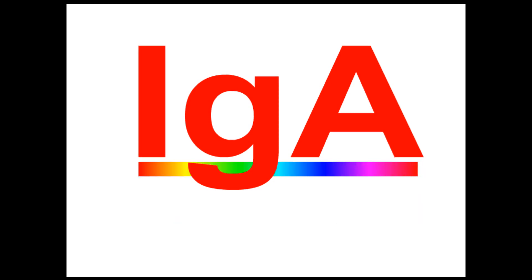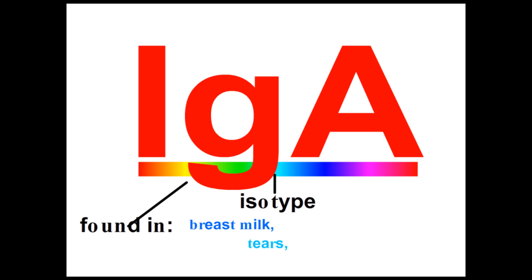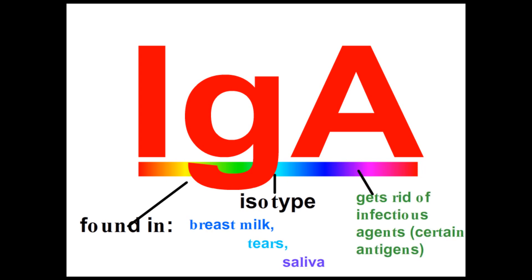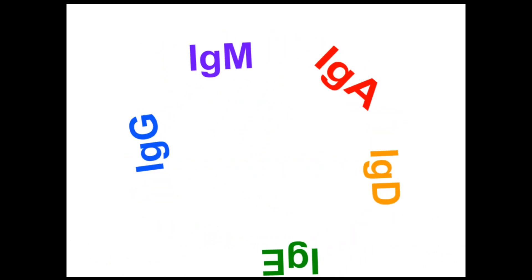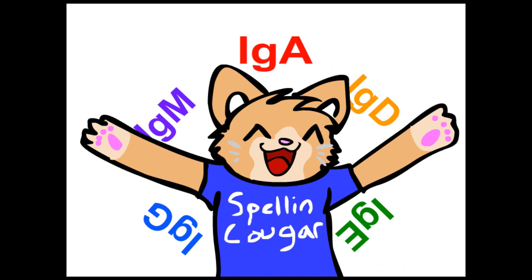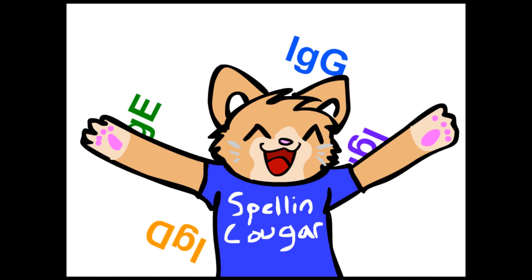IgA, for example, is an isotype found in breast milk, tears, and saliva, and it gets rid of infectious agents and antigens. The rest of the isotypes get rid of antigens in other parts of the body. Their diversity keeps you healthy all over.